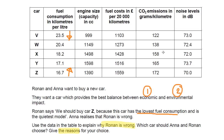Which one should they buy? If they want economic savings, they need one with the lowest cost per 20,000 kilometres — that's car V. Or you could say the lowest fuel per kilometre, which is also car V. And reason number two: they want one with the least environmental impact, so car V releases the least CO2 per kilometre. So on both counts — economic and environmental — car V is the better one.